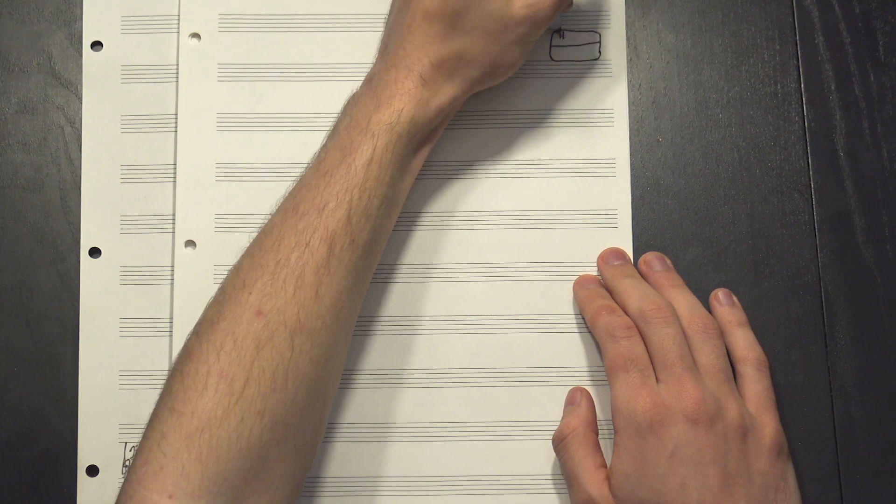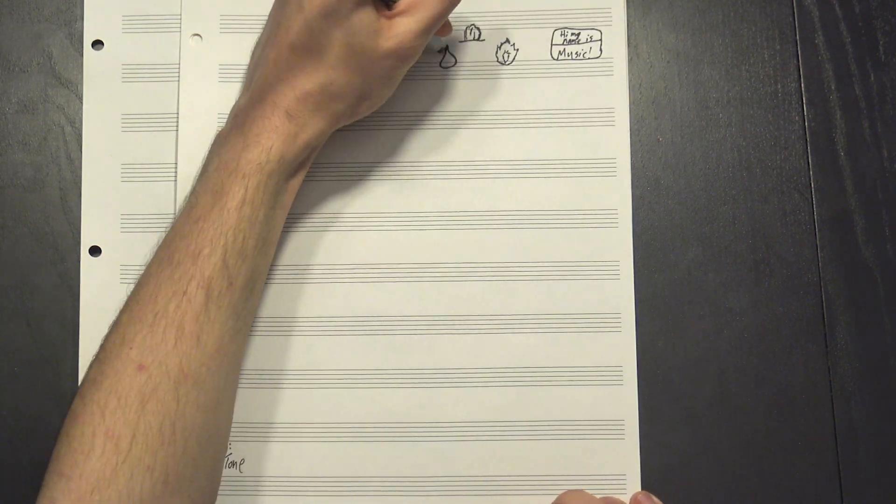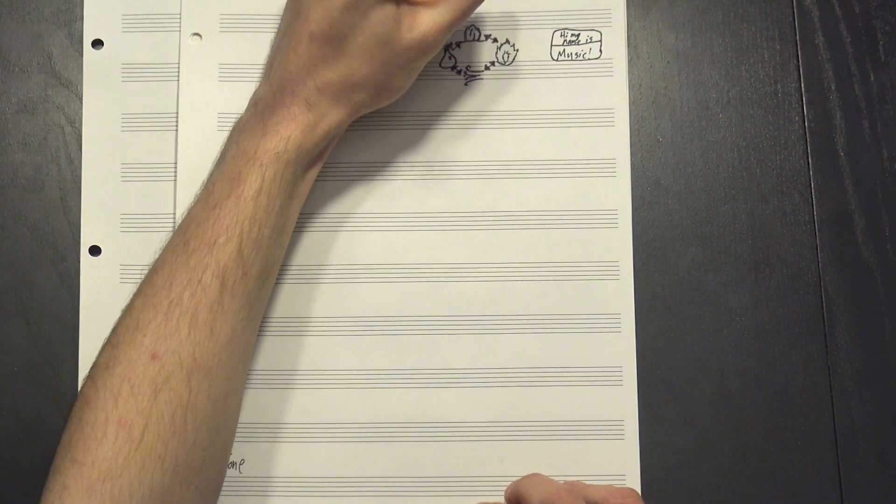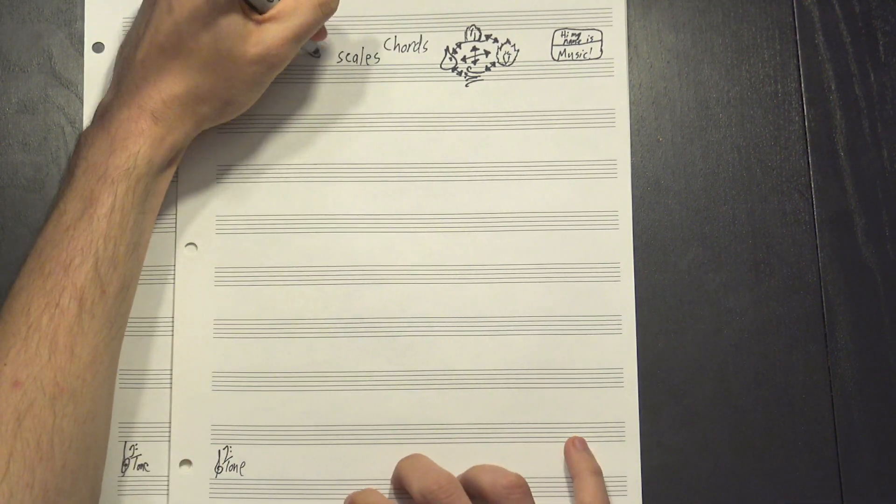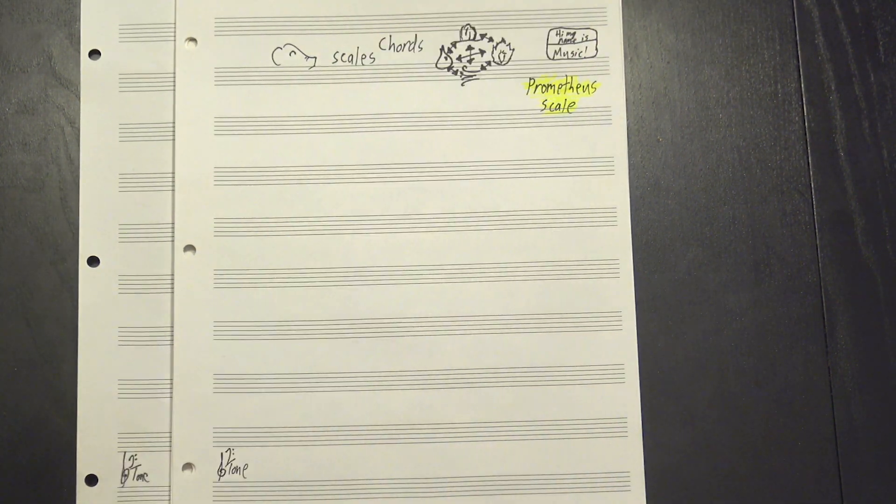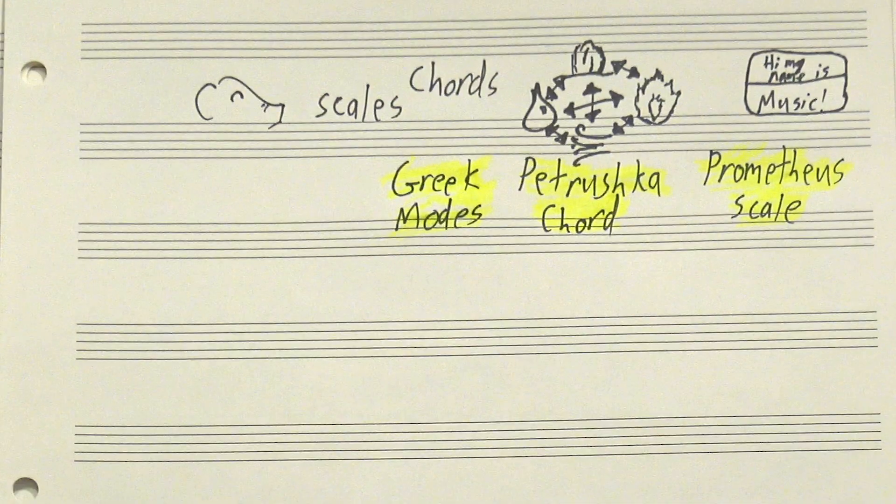Hey! Welcome to 12tone! Music theorists love naming things. It's how we put them into categories and describe their relationships and differences. We especially like naming chords and scales, and we've got some great ones, like the Prometheus scale, the Petrushka chord, or the Greek modes.